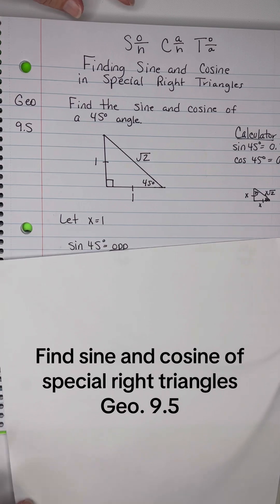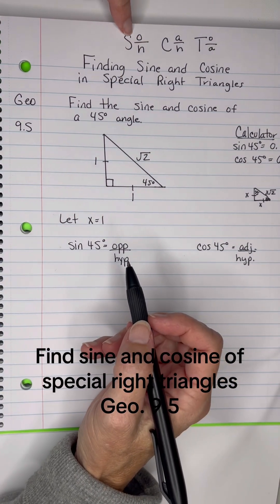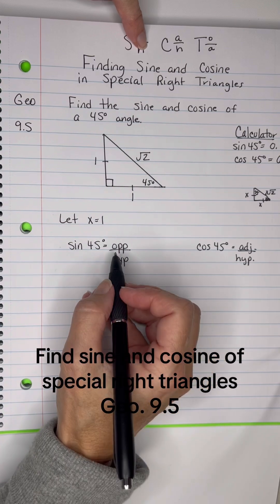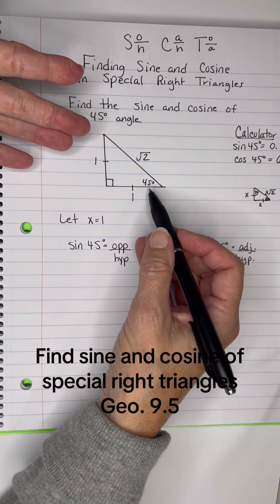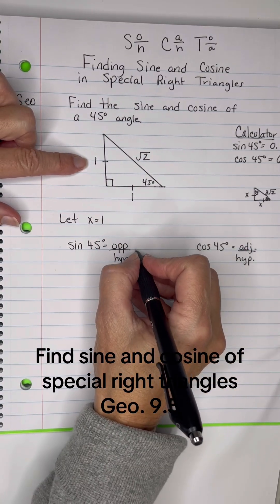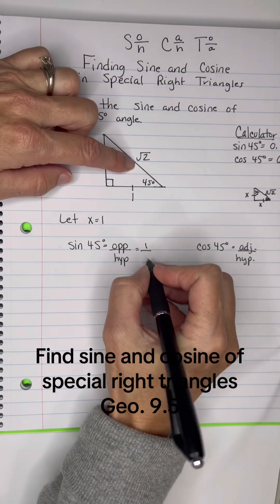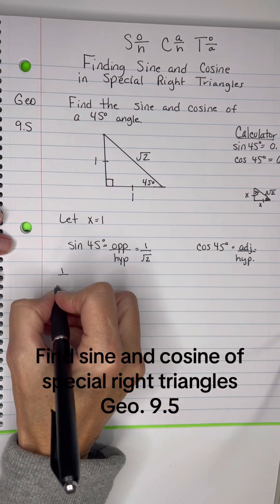Okay, now we know that the sine of 45, the sine is opposite over hypotenuse. So looking at this 45 right here, the opposite is 1, and the hypotenuse is root 2. Okay, so I've got 1 over root 2.